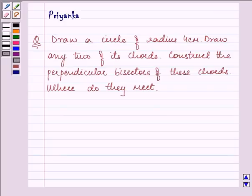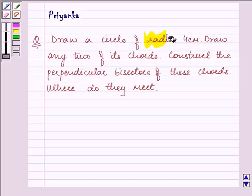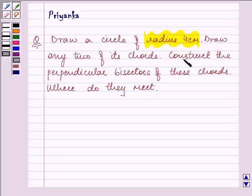Hello and how are you all today? The question says draw a circle of radius 4 cm, draw any two of its chords, construct the perpendicular bisectors of these chords. Where do they meet?